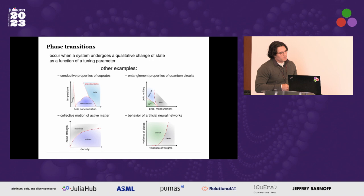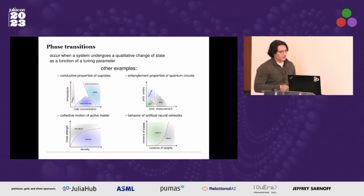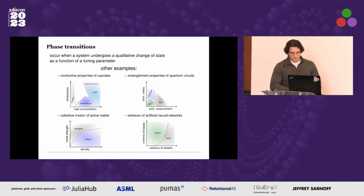Notable examples include transitions within the conductive properties of cuprates, which are materials showing superconductivity at very high temperatures, phase transitions in the entanglement properties of quantum circuits, in the collective motion of active matter such as a flock of birds, or in the behavior of artificial neural networks.